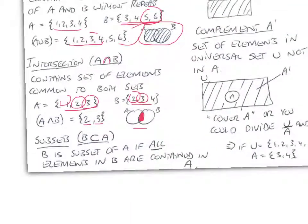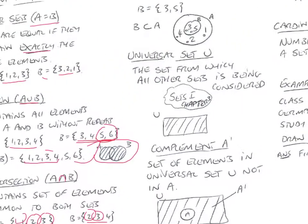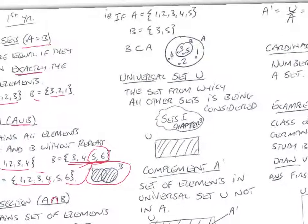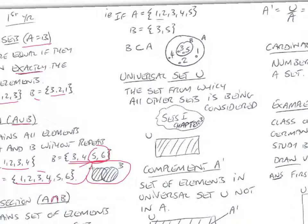Subsets. B is a subset of A if all the elements in B are contained in A. So if we just check up here, if A was equal to 1, 2, 3, 4, 5, and B is 3 and 5, then B contains 3 and 5, which are all part of the set A, 1, 2, 3, 4, 5. So B is a subset of A.